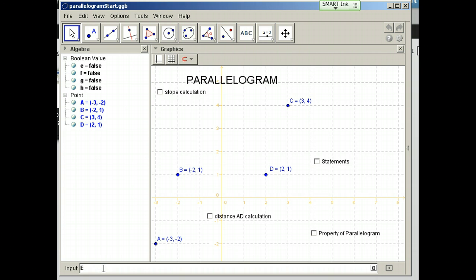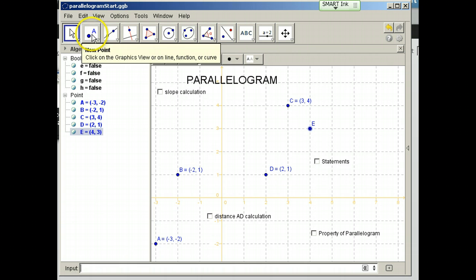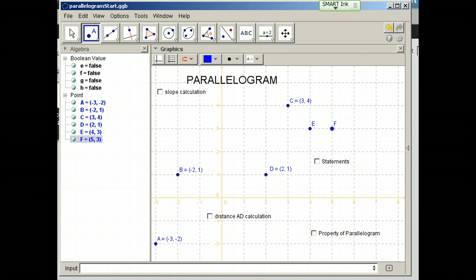Let's say I say E equals, open parentheses, four comma three, enter. And it places point E here at four comma three. Or I can place a point by clicking where I want the point and that will also be entered.